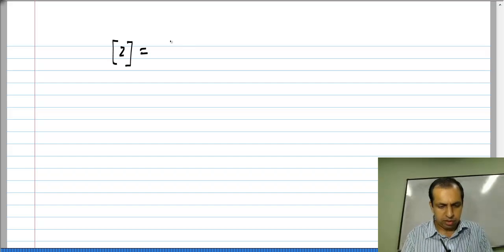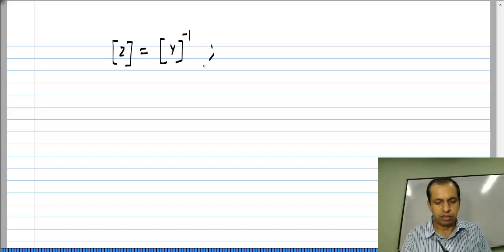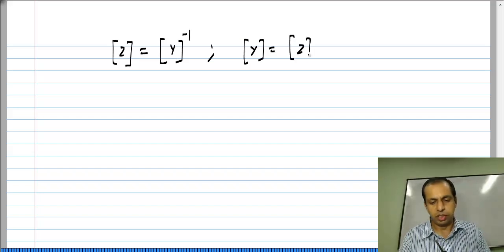The other relationships between the entire sets you already know. The Z parameter is basically the inverse of the Y parameter, or Y is the inverse of Z matrix.